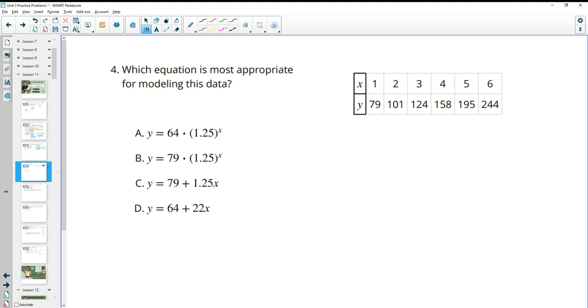Number four, which equation is most appropriate for modeling this data? So you can just go ahead and plug these values in and see what you get. So for this first one, when we do 64 times 1.25 to the first, we get 80. When we plug in 2, we get 100, which is pretty close. When we plug in 3, we get 125. When we plug in 4, we get about 156. When we plug in 5, we get about 195. And these are all still pretty close. And when we plug in 6, we get about 244. So all of these are really close. So this one's probably going to be the winner. I still like to check the others just to make sure.